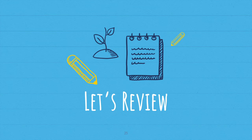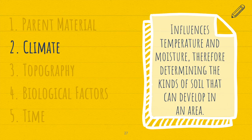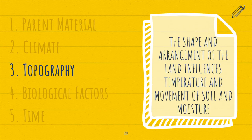Now we've made it through the breakdown of the five soil forming factors, so let's review. Parent material is a foundation for new layers of soil to develop. Climate influences temperature and moisture, therefore determining the kinds of soil that can develop in an area. Topography — the shape and arrangement of the land — influences temperature and movement of soil and moisture.